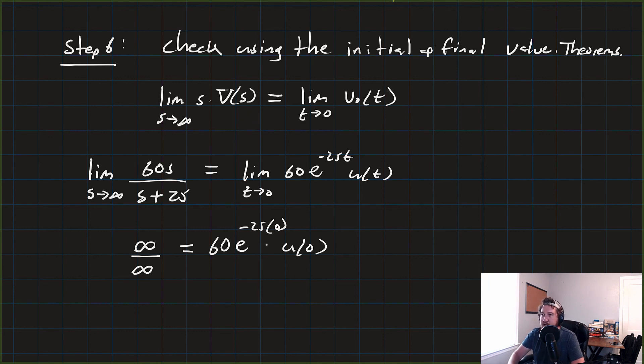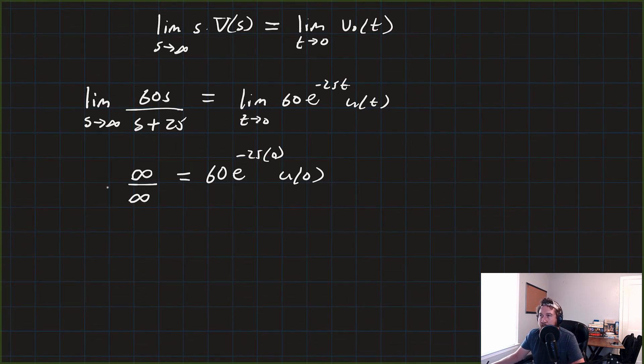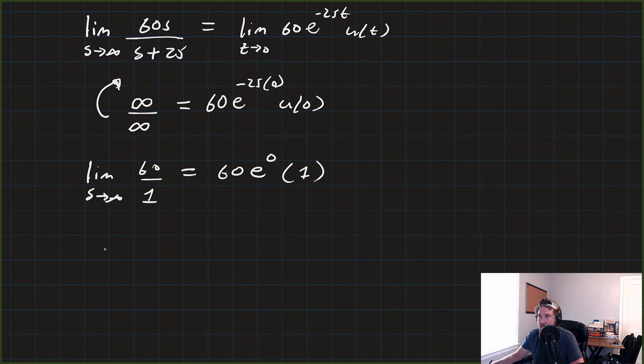We're going to start off. If we hit it once, we'll get actually just infinity over infinity is equal to 60 times e to the minus 25 times 0 times U to the 0. We'll resolve the right-hand side here in just a second. But if you remember, oh, goodness, what is it? Cal 1, L'Hopital's rule, right? It says you can take the derivative, and so that would be the limit as S approaches infinity of 60 over 1 is equal to 60 times e to the 0. E to the 0 is equal to 1 times 1. That's just going to leave us with, on the left-hand side, 60. Anything raised to the 0th power is 1, so 60 times 1 times 1 is just equal to 60.